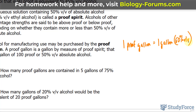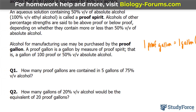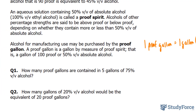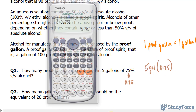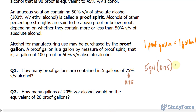That's going to be very important for question number one. In question number one we're asked: how many proof gallons are contained in 5 gallons of 75% volume per volume alcohol? The first thing I'll do is find out how much of these 5 gallons is alcohol alone. That can be done by taking the total volume of 5 gallons and multiplying it by the percentage 75, or as a decimal, 0.75. So by multiplying 5 gallons by 0.75, you should end up with 3.75.